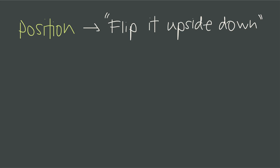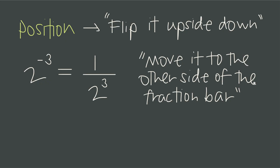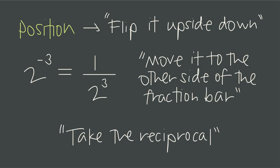A negative exponent is an instruction — it tells us to flip it upside down. So if we have 2 to the negative 3, it tells us to flip it upside down and make it 2 to the positive 3. Put it on the bottom of the fraction and change the sign on the exponent. Mathematically, that means moving it to the other side of the fraction bar, or taking the reciprocal — moving the base and its negative exponent to the other side of the fraction bar.